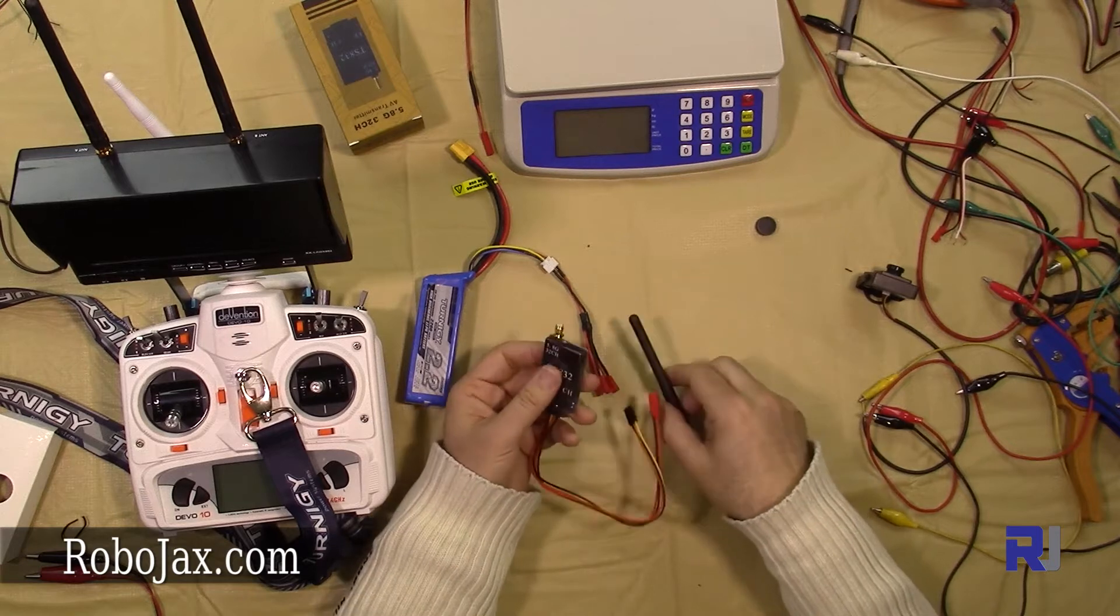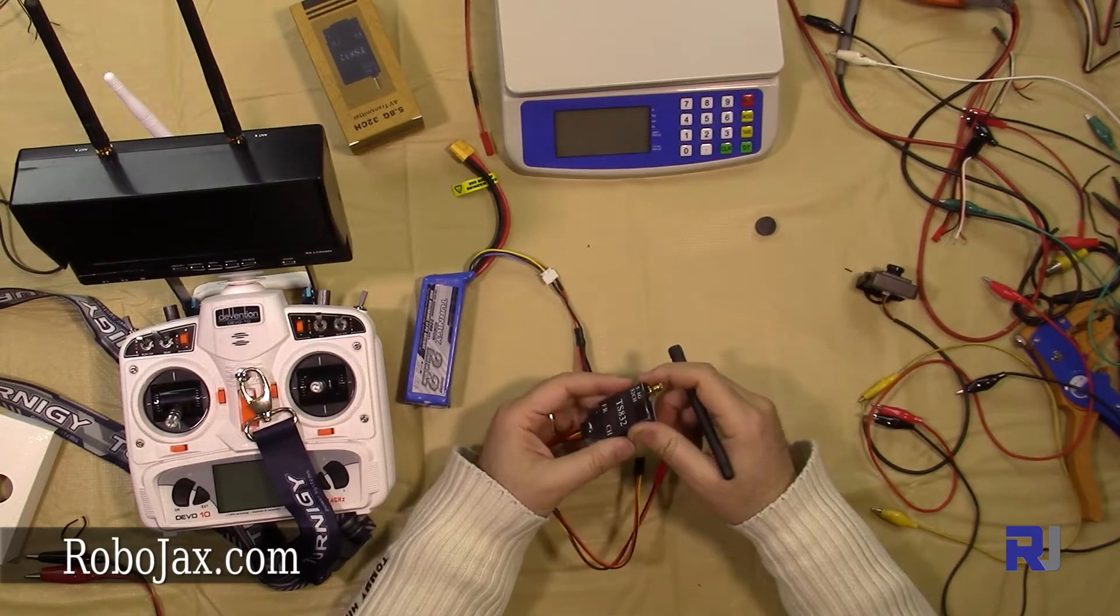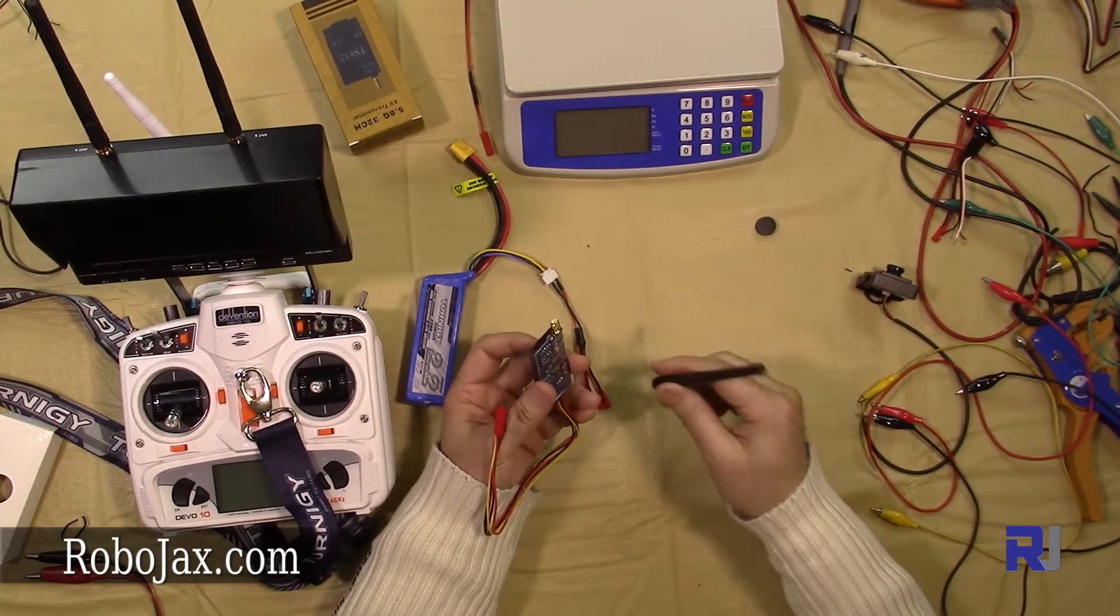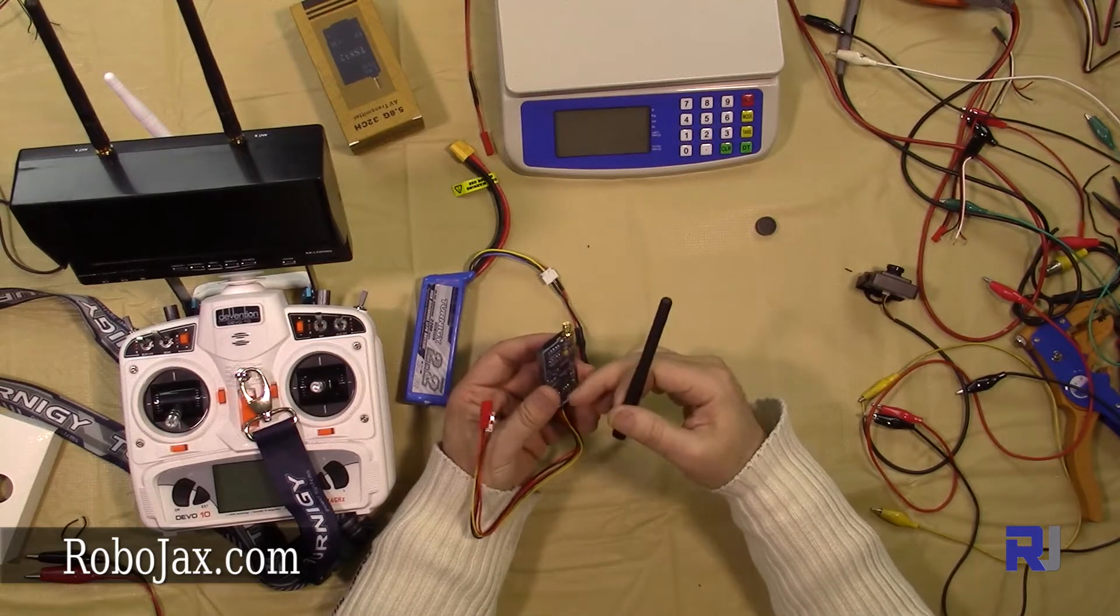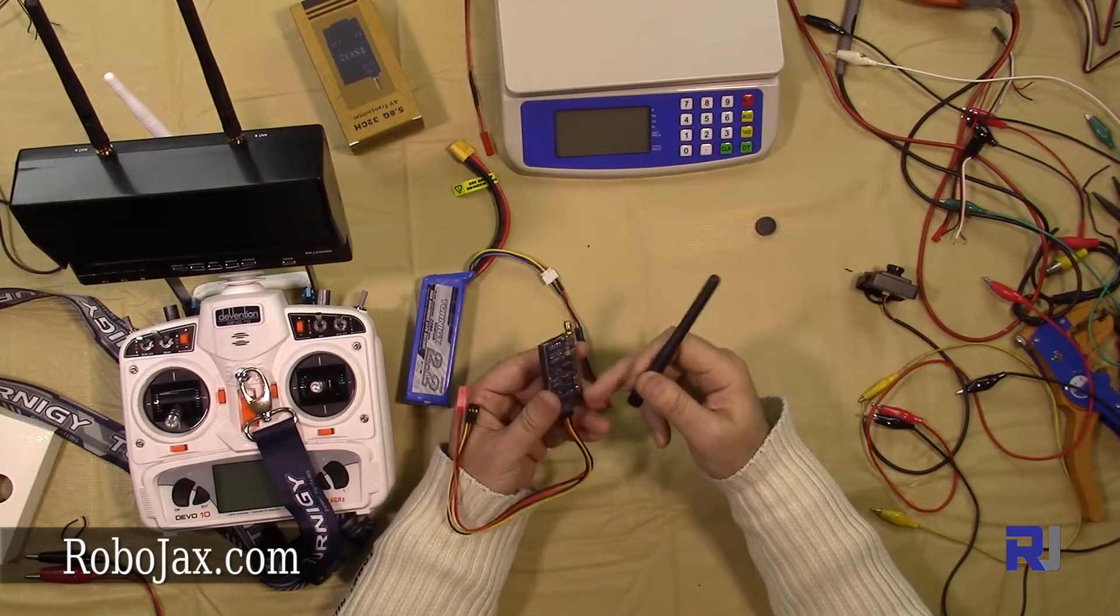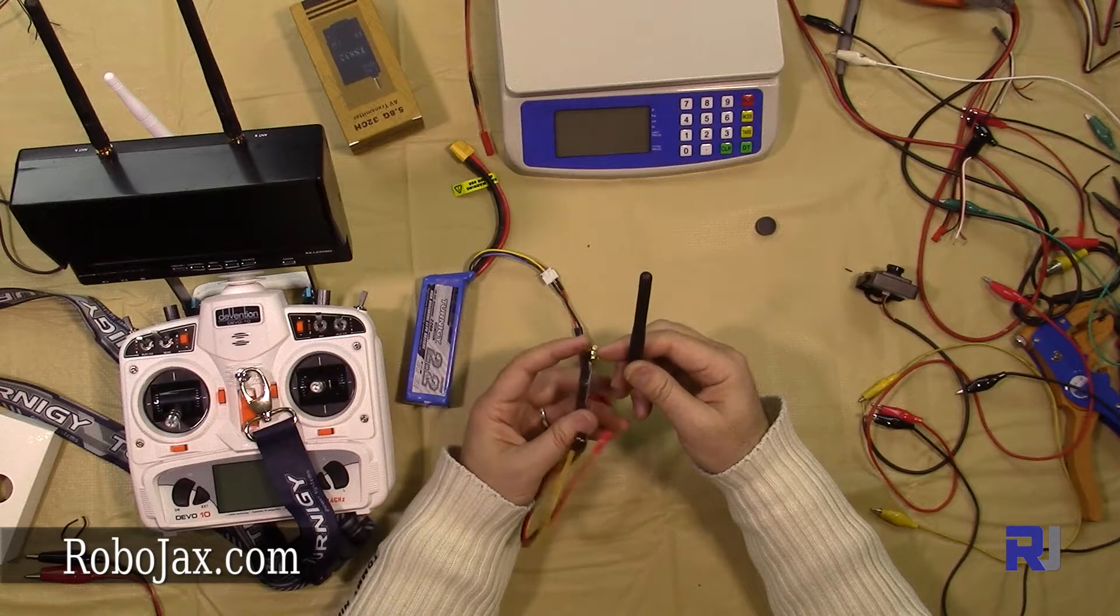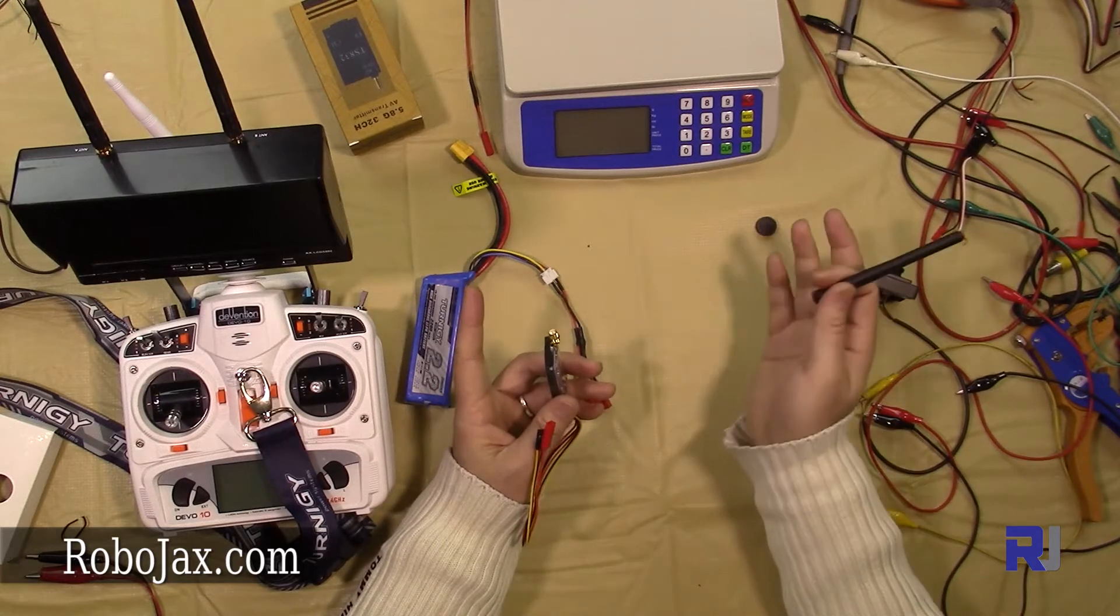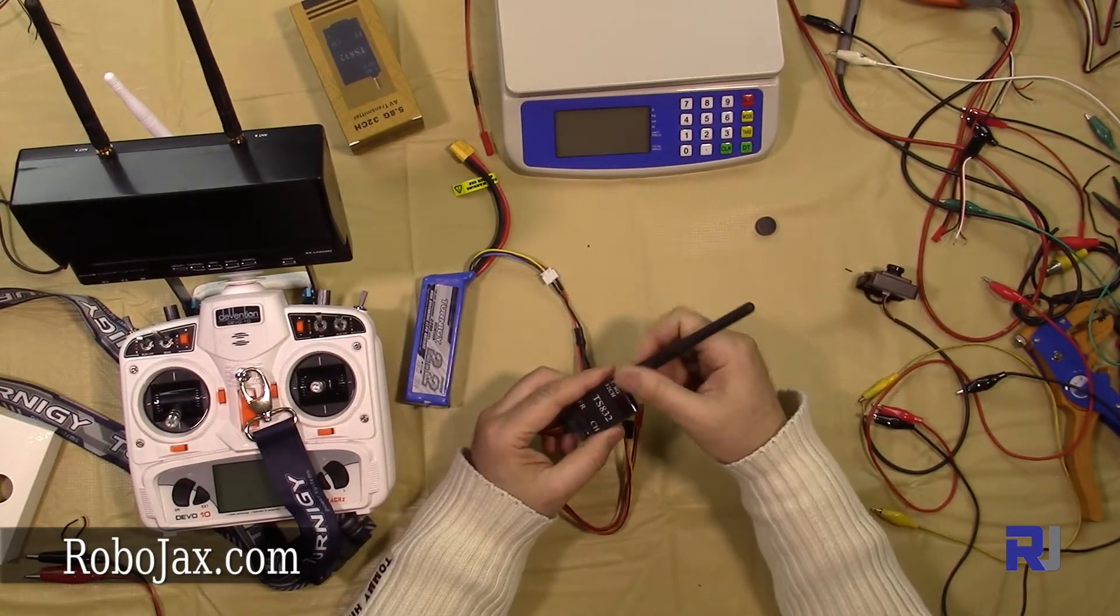Always remember, for FPV transmitters, never turn it on without putting an antenna. The power that is generated by the transmitter, if it's not propagated outside, reflects back and damages the transmitter. So connect that very tightly.